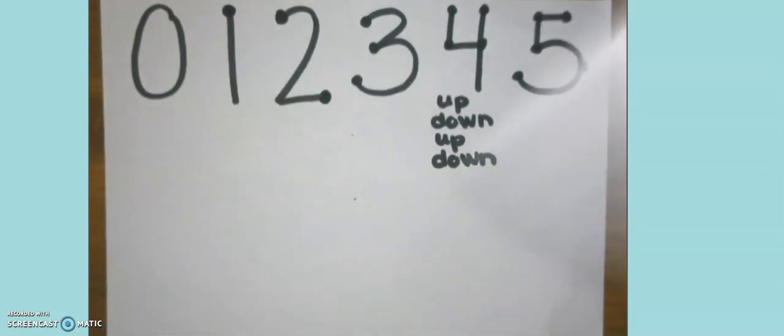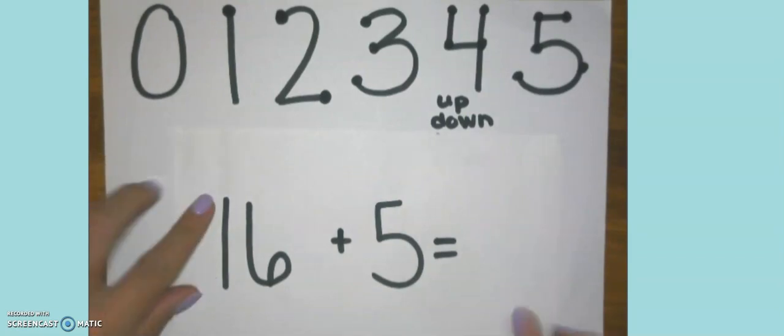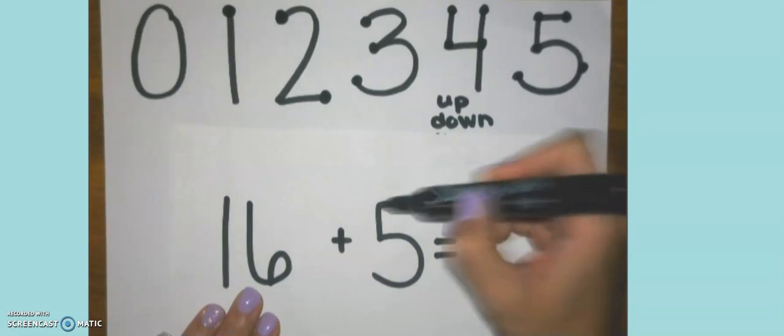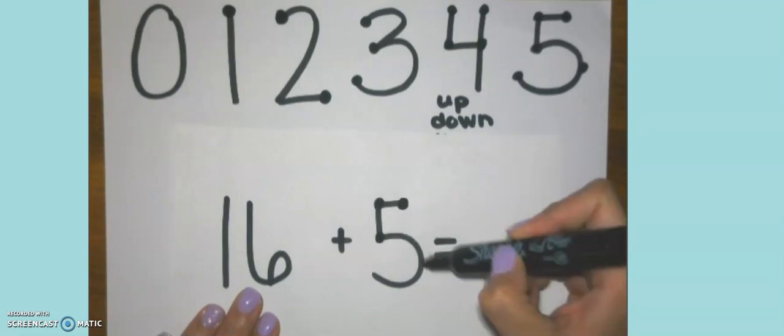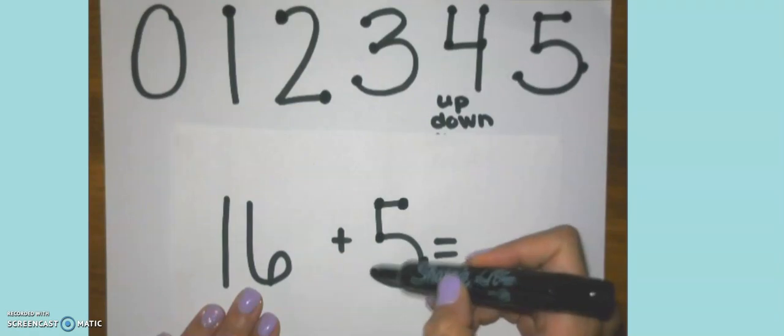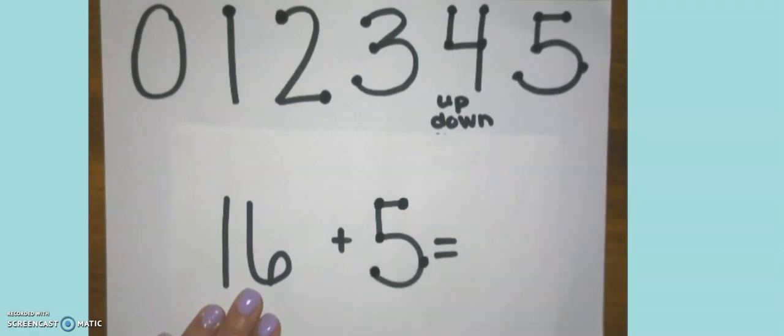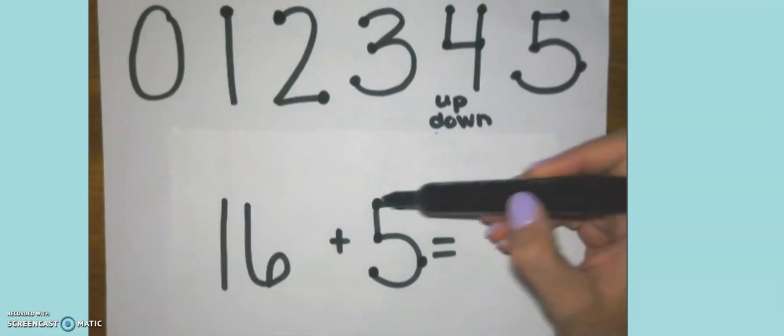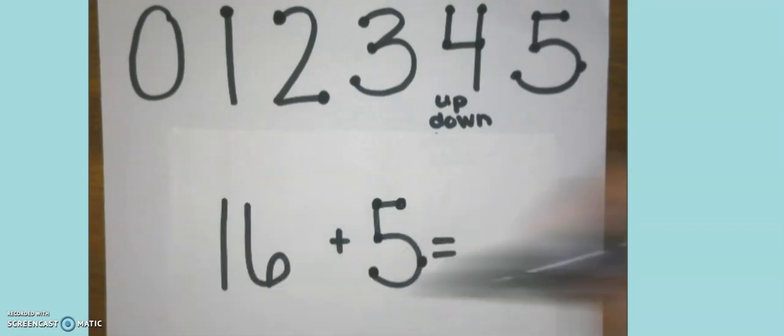And the last example addition problem today is 16 plus five. Now, this is one of those larger equations like we talked about at the beginning. 16 is obviously bigger than five. So let's put our touch points on five. Don't forget the belly button. And I'm going to keep counting on 16, 17, 18, 19, 20, 21. And that's all I need to do.